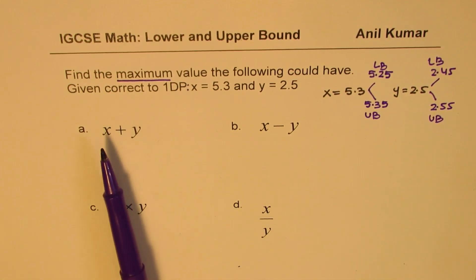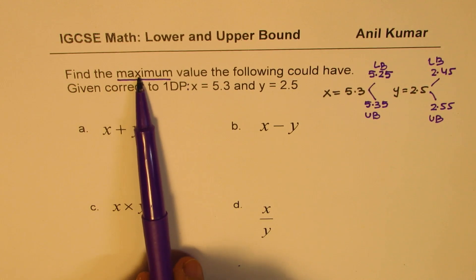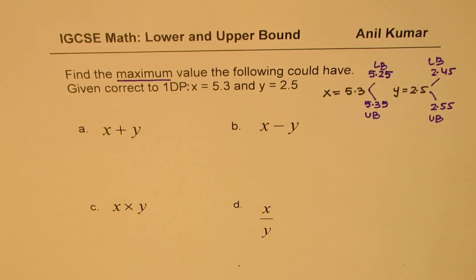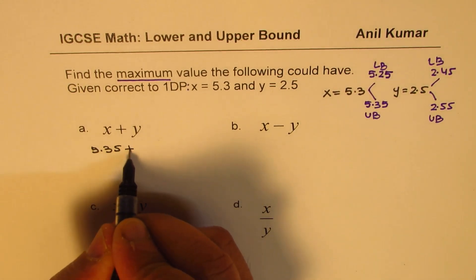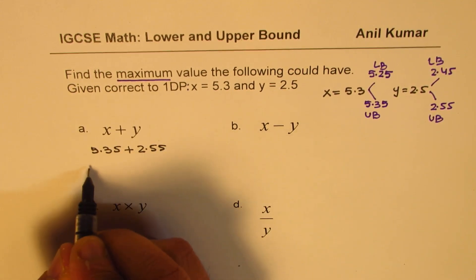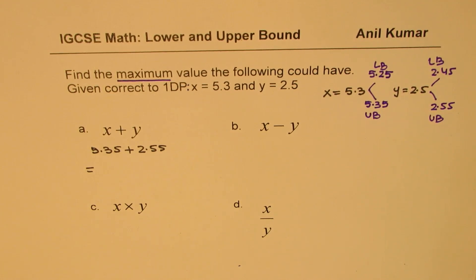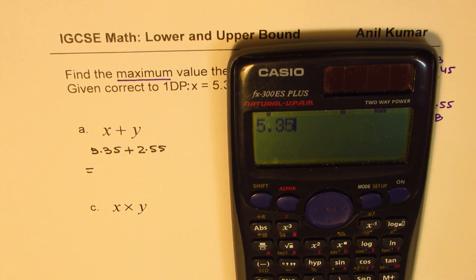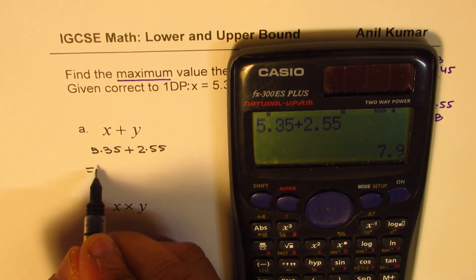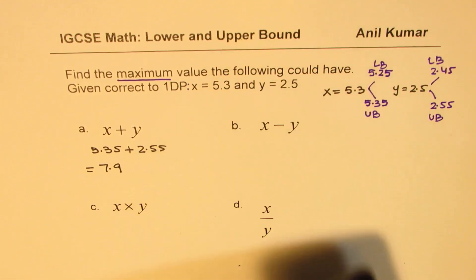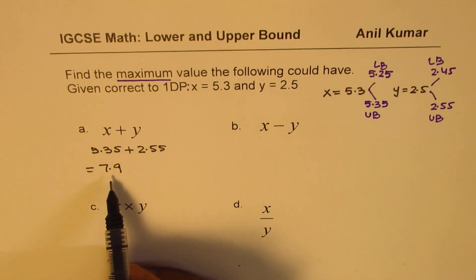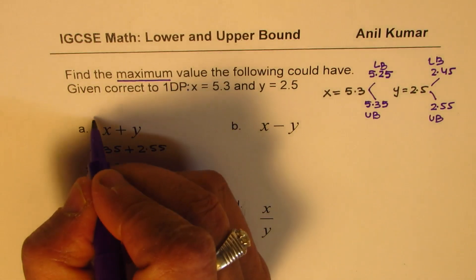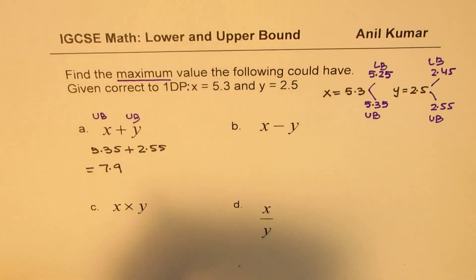If the calculation involves addition of these two, to get the maximum I have to take the maximum values. So I'll add the upper bounds: 5.35 plus 2.55. Using a calculator, 5.35 plus 2.55 gives me 79 over 10, or 7.9. So 7.9 is the maximum value. If I had added any other combination, I would get lower than this. So the maximum is when we take both upper bounds.